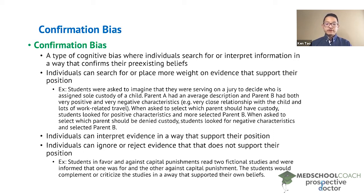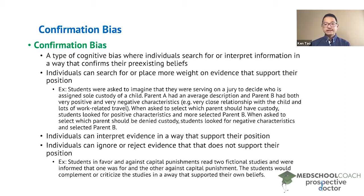For example, a student who was in favor of capital punishment, when reading the fictional study that was for capital punishment, would say good things about how the study was designed well. When describing the study that was against capital punishment, the same student would criticize it and say the study was not performed very well. This would be the exact opposite for a student initially against capital punishment. You can see how individuals are both interpreting evidence in a way that supports their position and ignoring or rejecting evidence that goes against it.